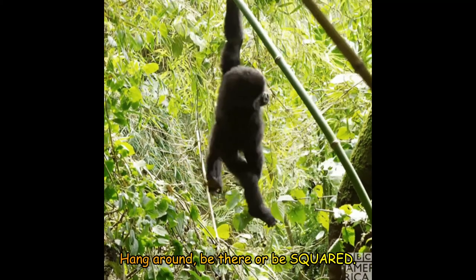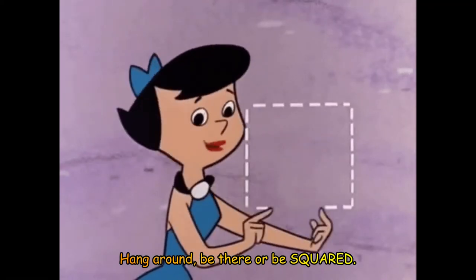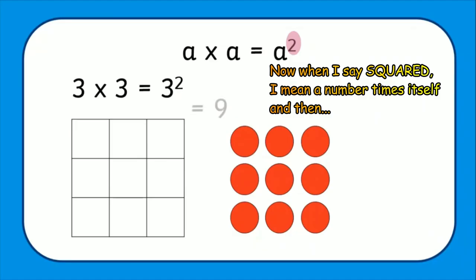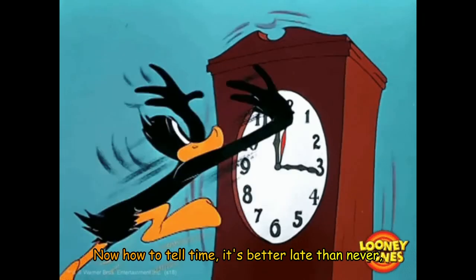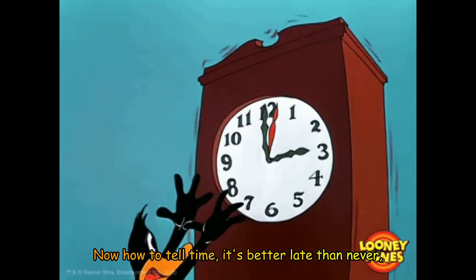We're nearly finished, we're nearly prepared — hang around, be there or be squared. Now when I say it's squared, that means a number times itself. And then cubed is similar — just times it again and again.